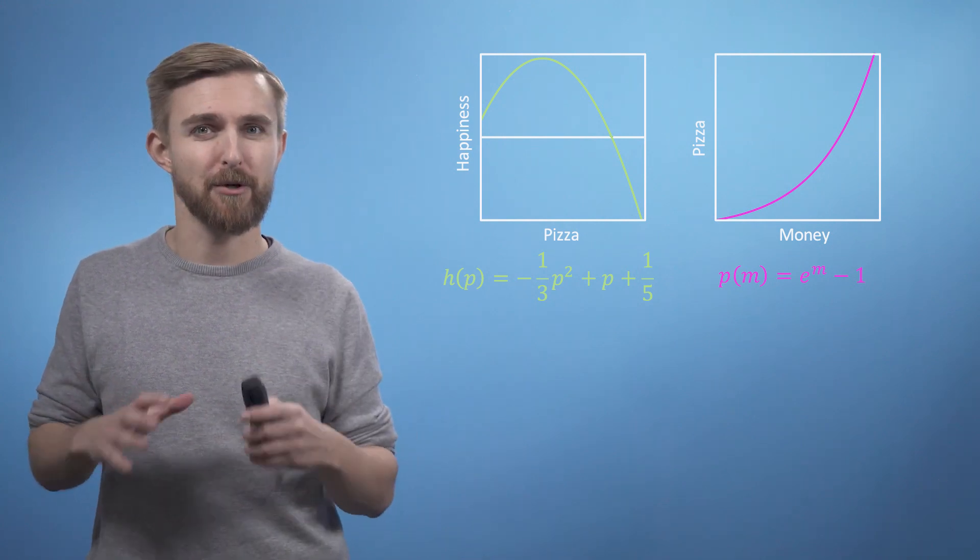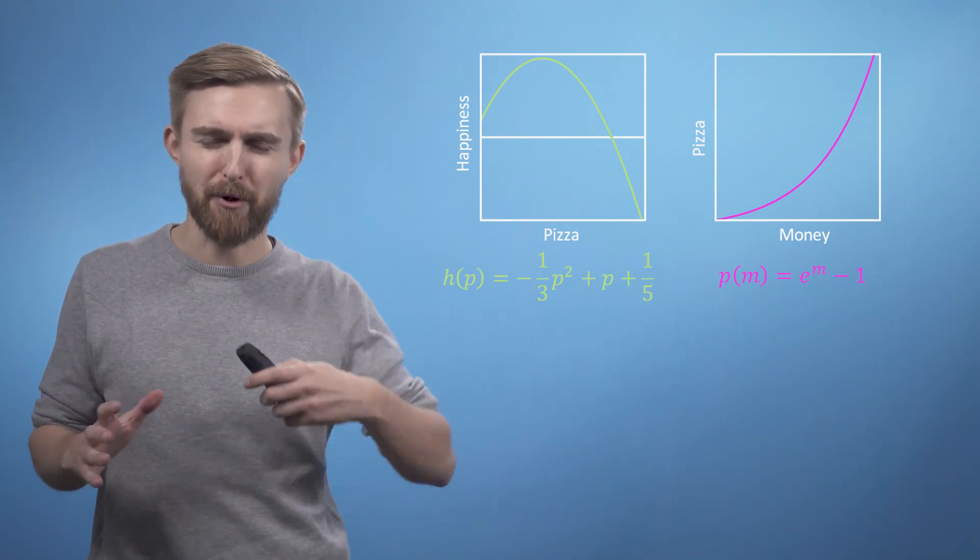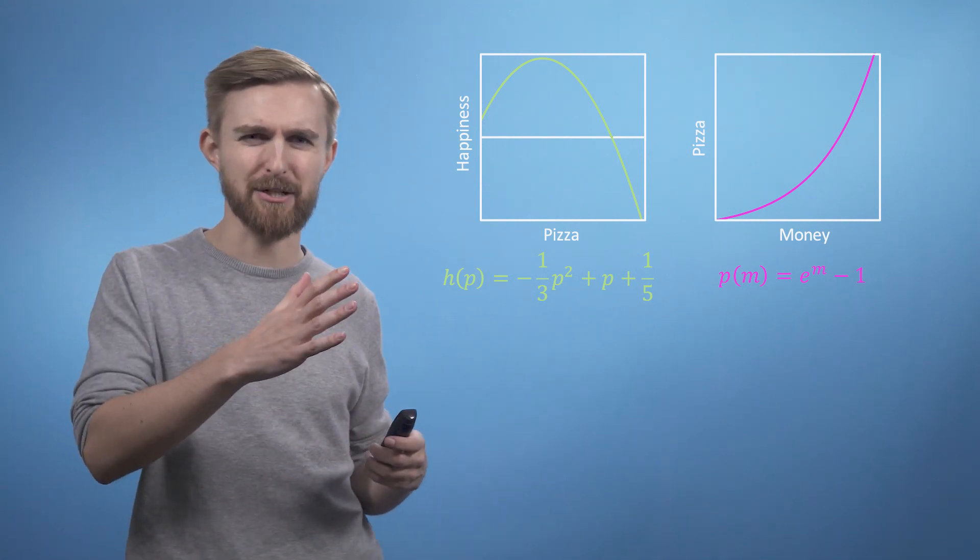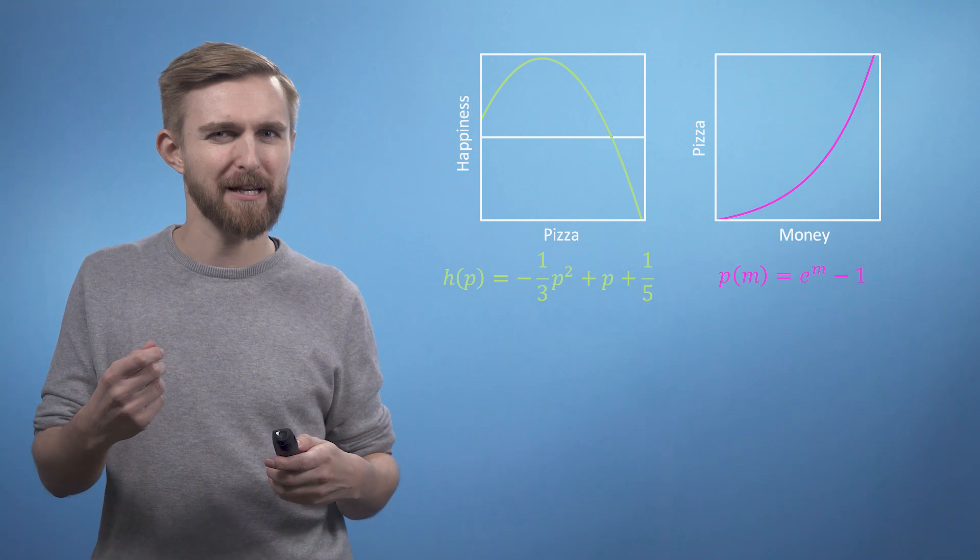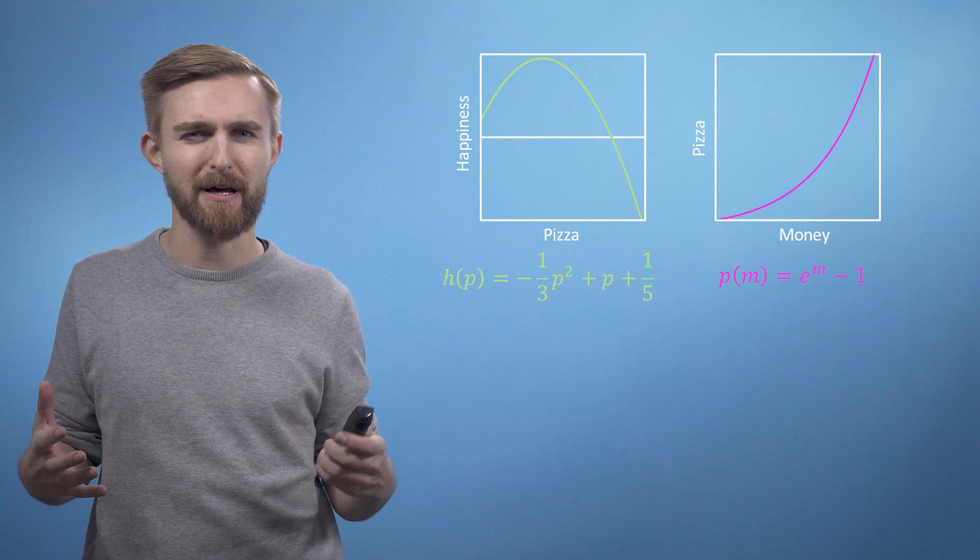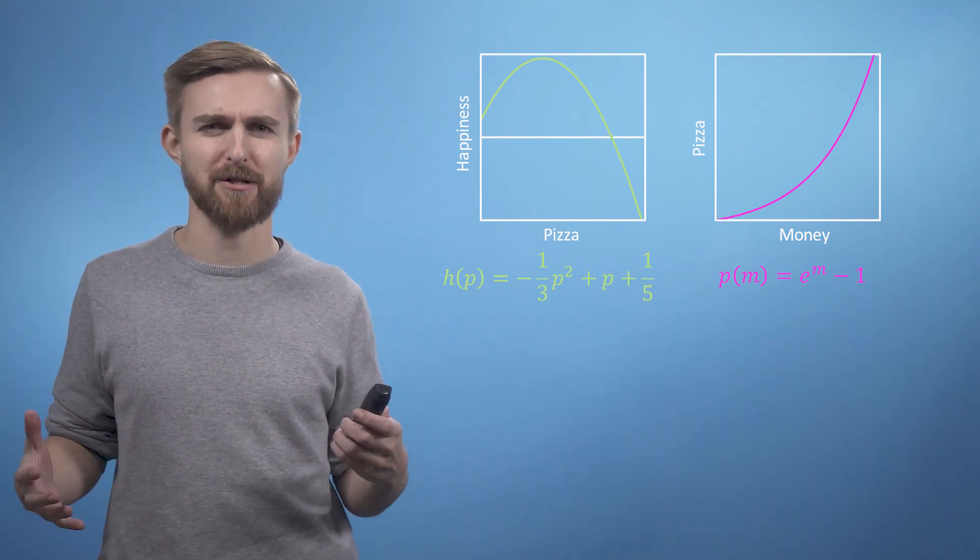If you've got no money, you can't buy any pizza. But the more money you have, your pizza purchasing power increases exponentially. As at first you can take advantage of bulk buy discounts, but as you start getting really rich, you can buy your own pizza oven, and eventually even build your own pizza factory.